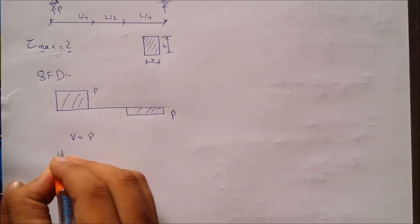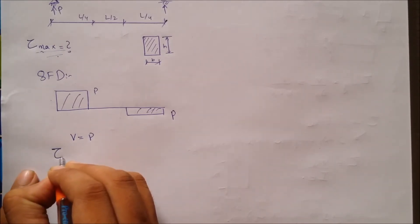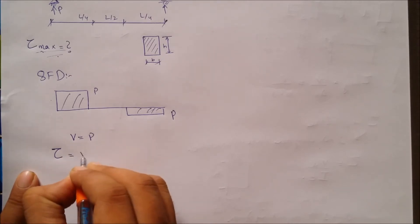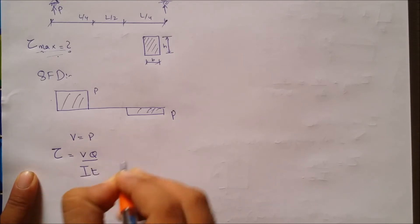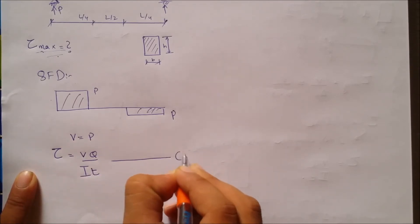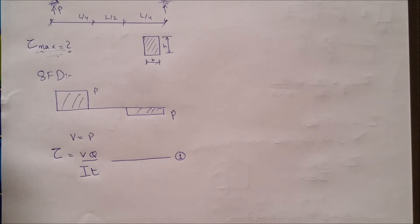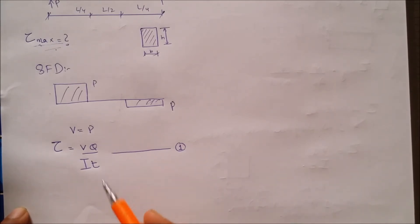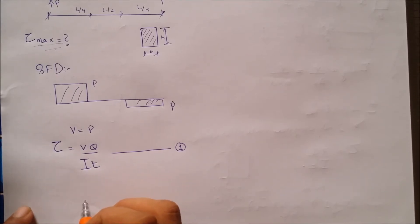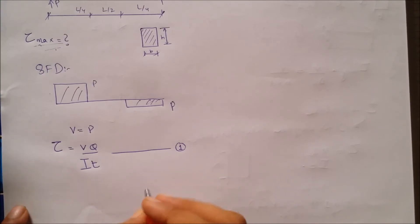The shear stress profile equation is VQ over IT. Let's call this equation number 1. In order to obtain different values on the profile, we select different points in the cross section. Let's first find out the moment of inertia of the cross section.